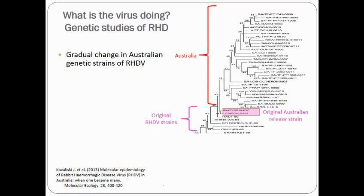We have also been interested in what the virus itself is doing, by looking at the genetic makeup of viruses extracted from the livers of rabbits which have recently died of RHD. This genetic tree shows the degree of genetic relatedness of different viruses. Since RHD was first released there has been genetic divergence — the viruses have been changing at a steady and continuous rate, and newer emerging variants have been replacing the older ones, which drop out of the system.